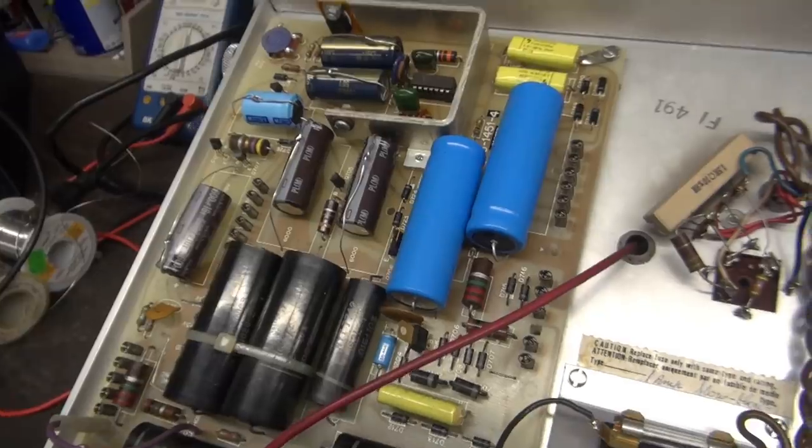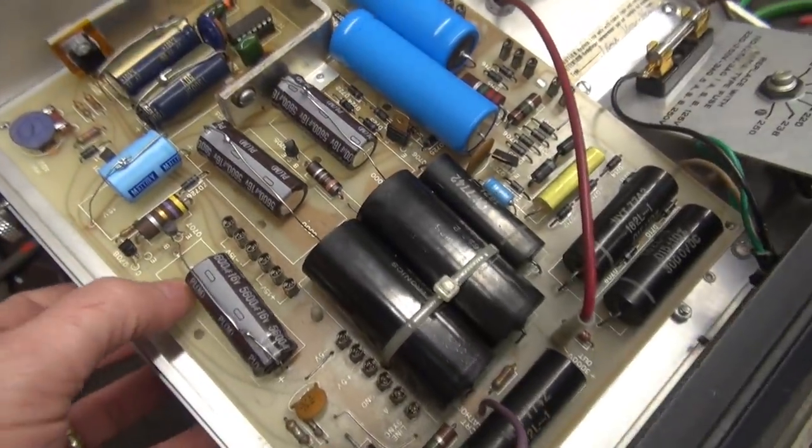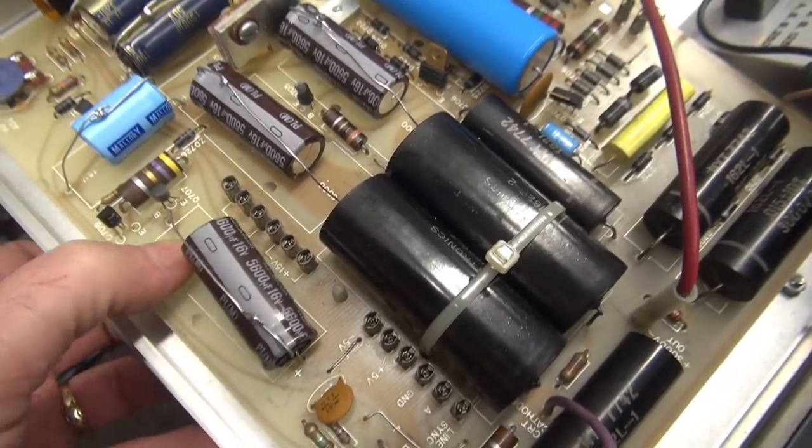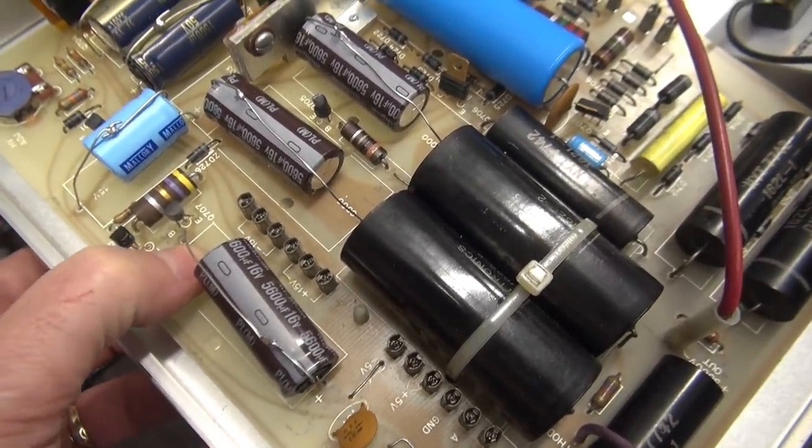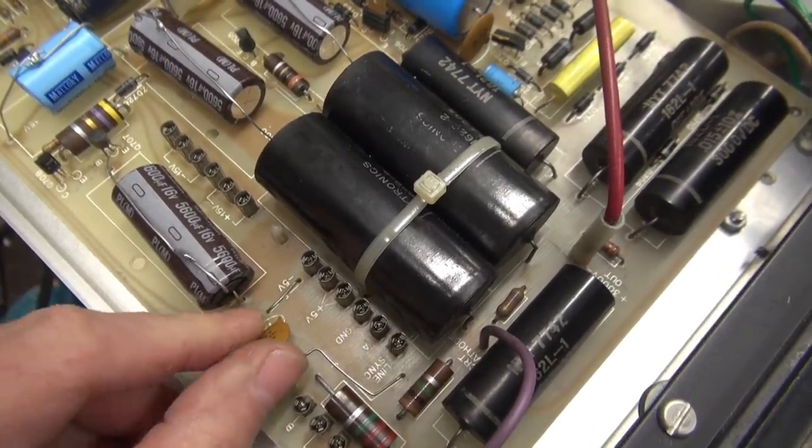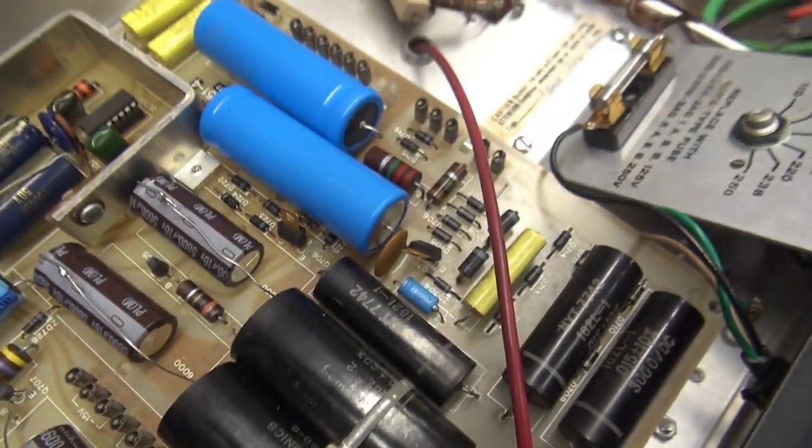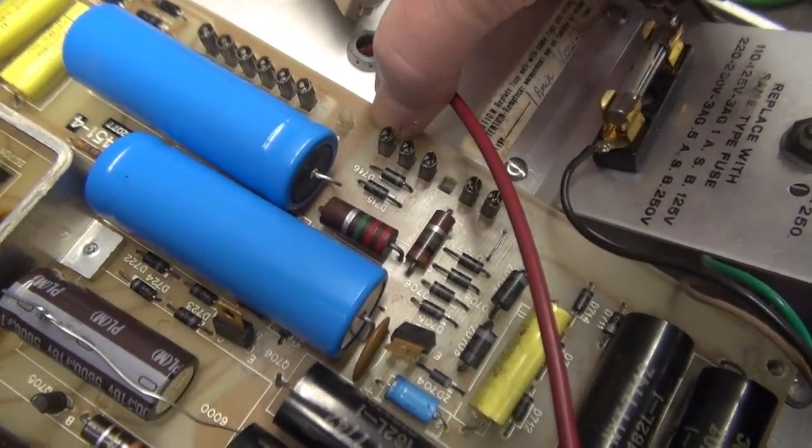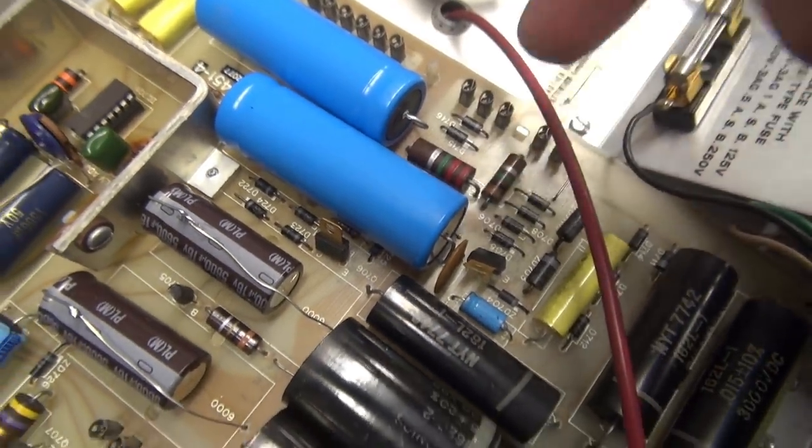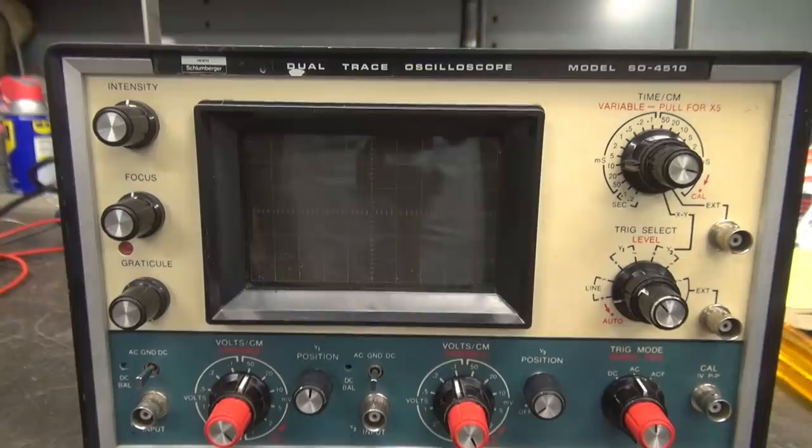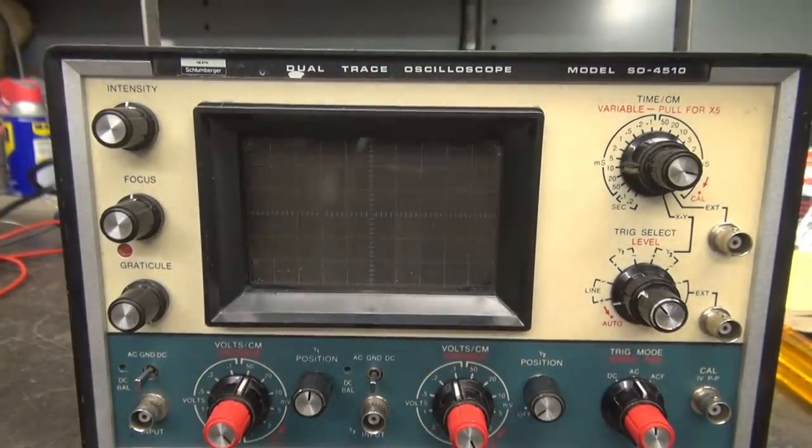So the board is temporarily reinstalled. I've noticed if you watch the center of this board springs quite a bit so these connections can obviously have issues with that. So before I permanently call this job good I need to find a way to support the center of that board better so it doesn't try to bow especially in shipping.